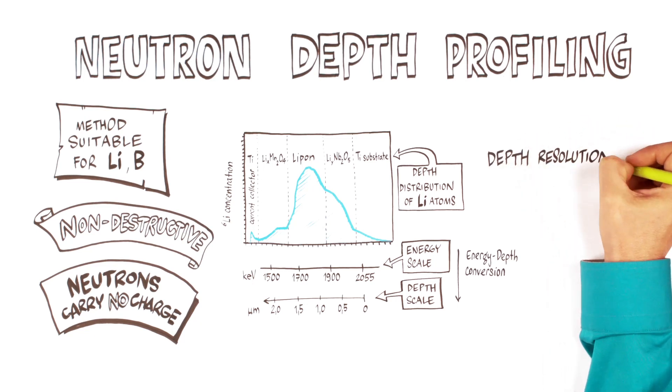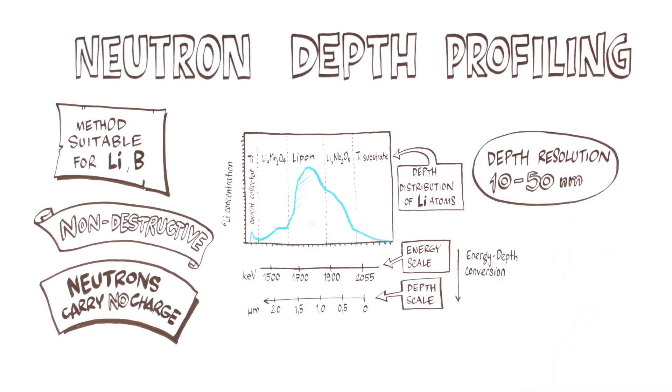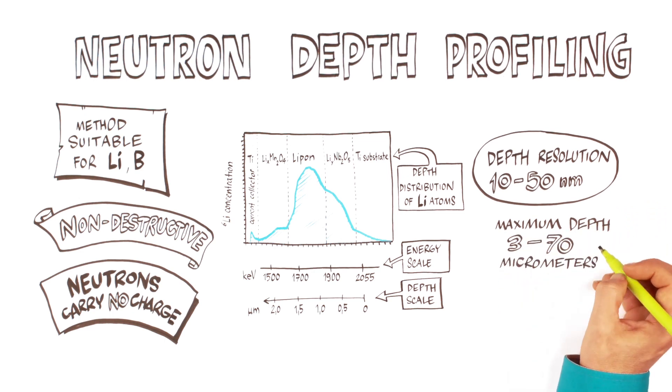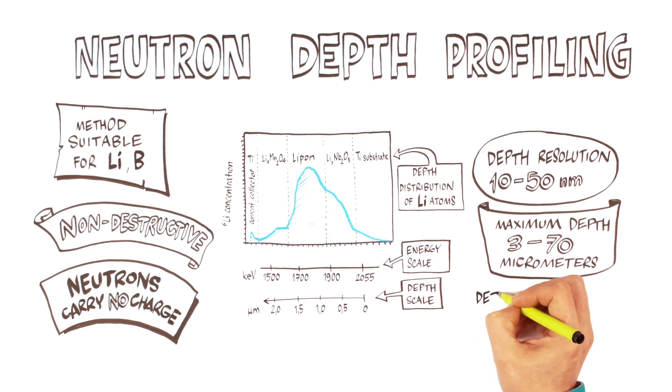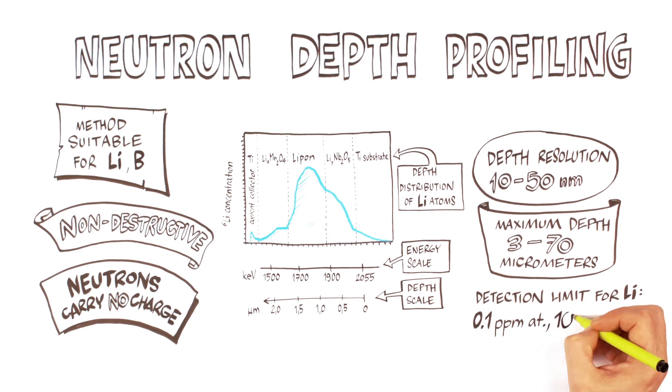The depth resolution is between 10 and 50 nanometers. Maximum detection depth depends on the type of studied material. It ranges from 3 to 70 micrometers. The detection limit is about 0.1 lithium monolayer. Thanks to these properties, the neutron depth profiling method is an excellent tool for the investigation of lithium ion transfer.